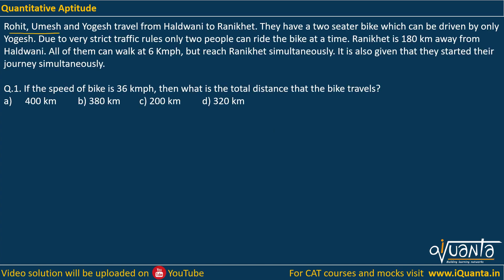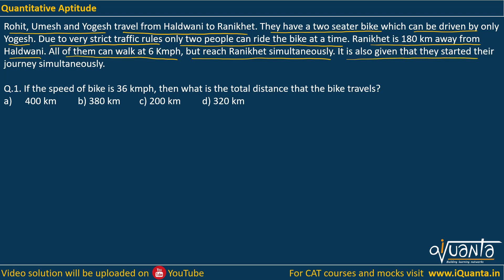Rohit, Umesh and Yogesh travel from Haldwani to Ranikhet. They have a two-seater bike which can be driven only by Yogesh. Due to very strict traffic rules, only two people can ride the bike at a time. Ranikhet is 180 kilometers away from Haldwani. All of them can walk at 6 kmph and they reach Ranikhet simultaneously, having started their journey simultaneously.